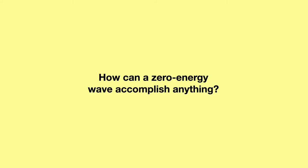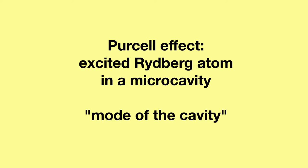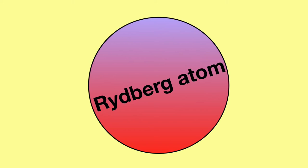You may ask, how can a zero energy wave accomplish anything? Well, I'm going to tell you a story. This story is about the Purcell effect, and the point of this story is to show you that zero energy elementary waves are in control of how things happen, even though they have zero energy.